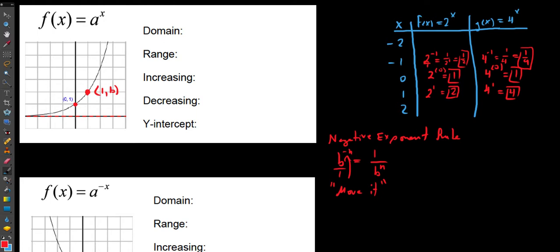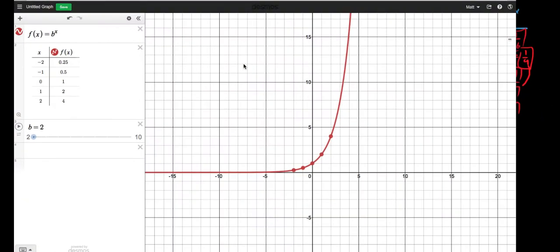Continuing the pattern: 2^2 = 4, so 2^(-2) = 1/4. And 4^2 = 16, so 4^(-2) = 1/16. You start to see these reciprocal patterns occurring. Let's pop over to Desmos and take a look at what these graphs look like. I've got the graph of f(x) = b^x with base 2.